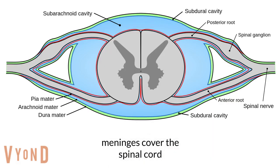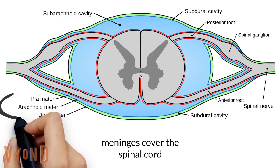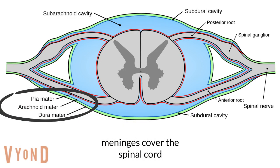Here is a transverse section of the spinal cord. The spinal cord is covered by the meninges, which have three layers. The outer layer is a tough fibrous layer called the dura mater.